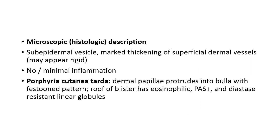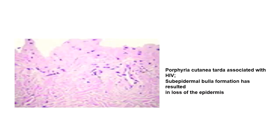If you are doing a skin biopsy, the histologic description regarding porphyria cutanea tarda: there is a sub-epidermal vesicle with marked thickening of superficial dermal vessels, which may appear rigid, and there is no or minimal inflammation. In porphyria cutanea tarda, the dermal papilla protrudes into the bulla with a festoon pattern. The roof of the blister has eosinophilic, PAS-positive, and diastase-resistant linear globules. As you can see in the picture, there is porphyria cutanea tarda associated with an HIV patient, with sub-epidermal bulla formation resulting in loss of the epidermis.